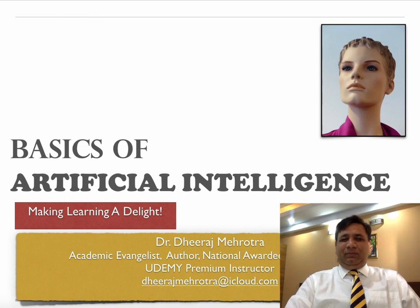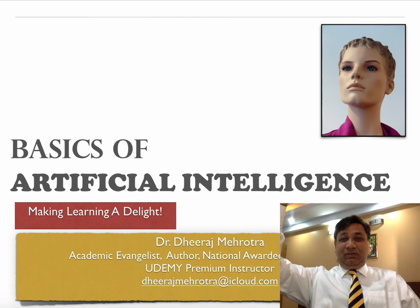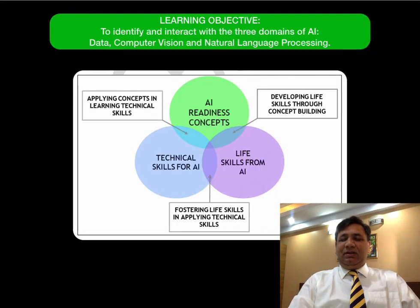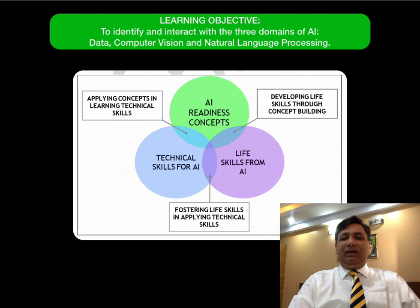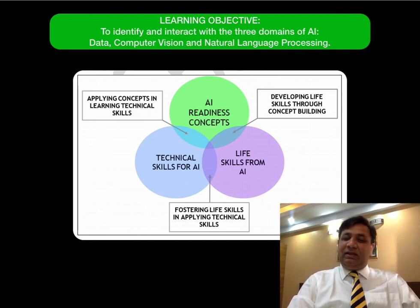Children already know this is in the book, so let's explore something new. The learning objective is to identify and interact with the three domains of AI: computer vision, data, and natural language processing. AI readiness encapsulates life skills from AI and technical skills of AI. We need to develop life skills through concept building, fostering life skills, and applying technical skills to make our lives easier and smarter.